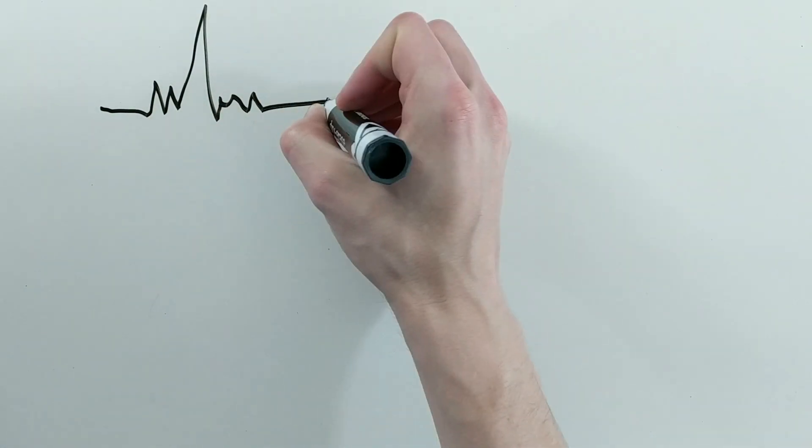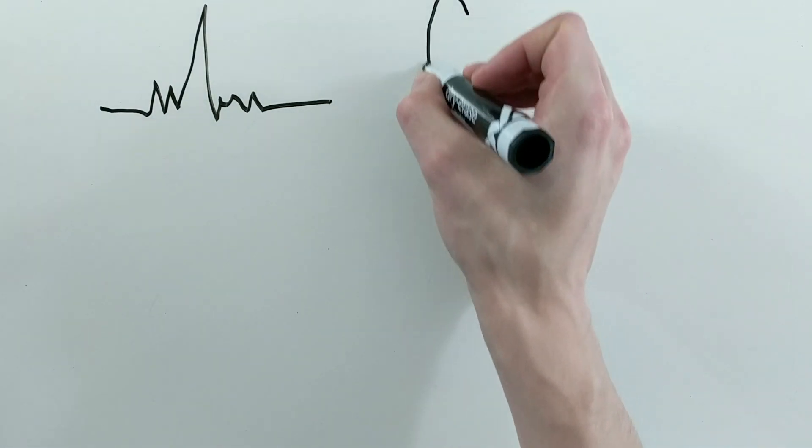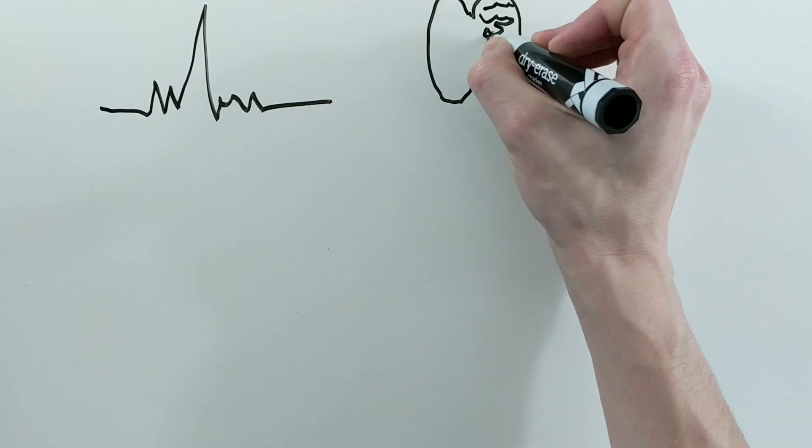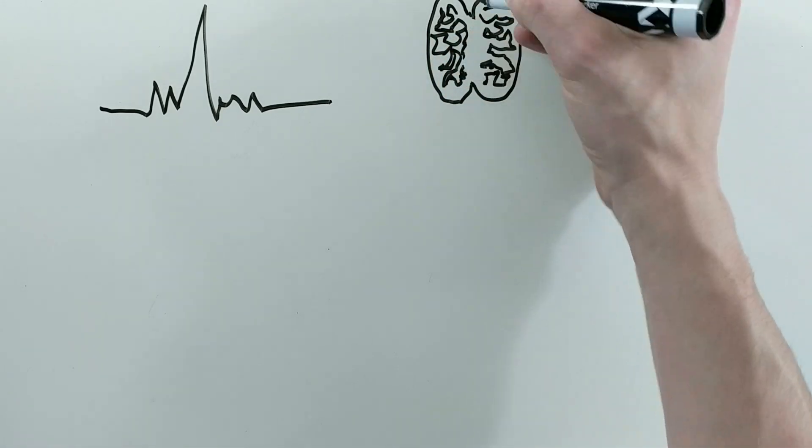Early on in the development of neural networks, most activation functions were created to represent the action potential firing in a neuron, because after all, neural networks were originally inspired by how the brain works.